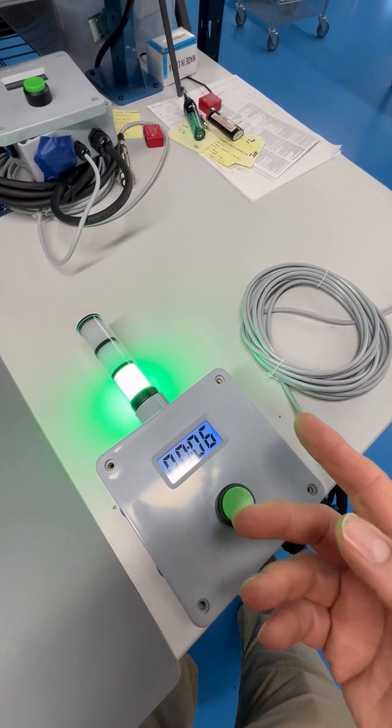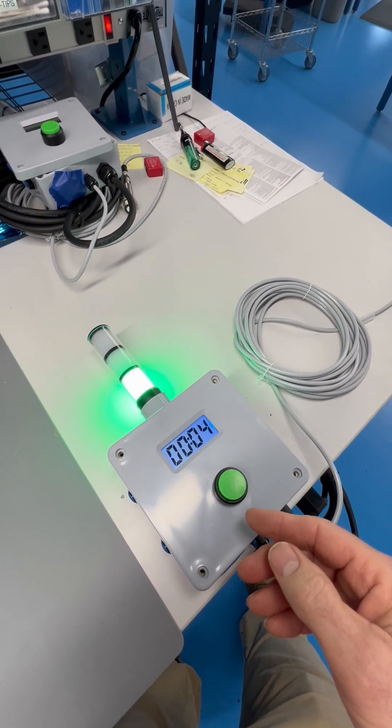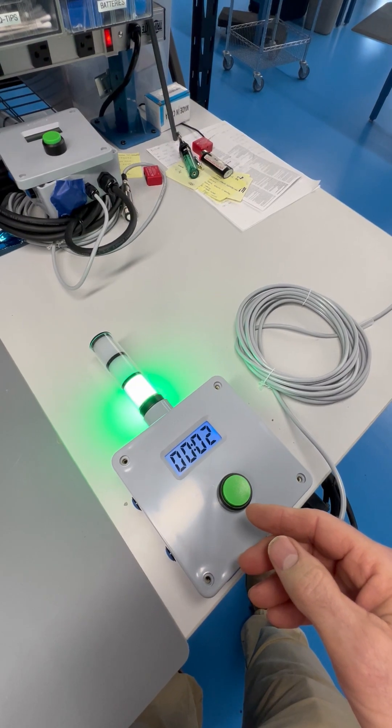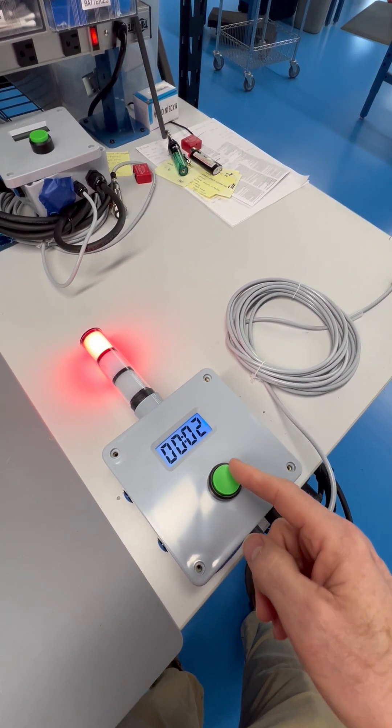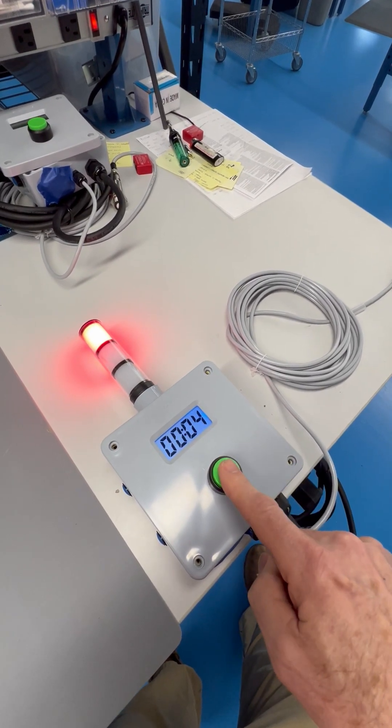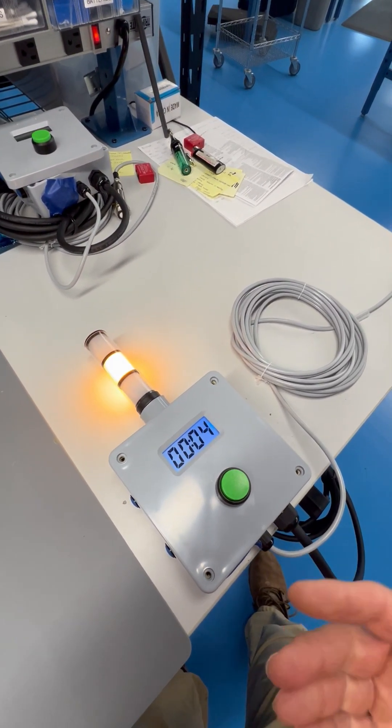It's green for the primary countdown. Then when it's time to pull the rack up out of the tank, it'll go red and count up. The operator pushes the button and then you have your drip time.